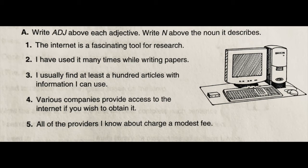Let's look at Part A, number 1 on page 51. The instructions for numbers 1 through 5 say: write ADJ above each adjective and write N above the noun it describes. The sentence is: 'The internet is a fascinating tool for research.' Let's look at our nouns — we have 'internet,' 'tool,' and 'research.'